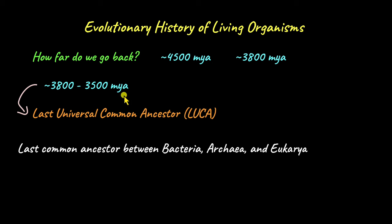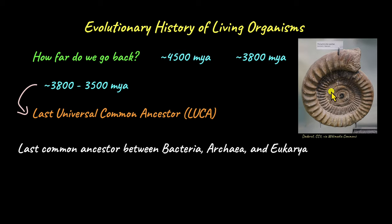A lot of evidence for living organisms during a certain time period in history comes from fossil evidence. For example, the Nautilus was a marine organism that lived a long time back, and when it fell on the ocean bed, the place where it fell hardened and formed fossilized rock. Scientists can date this rock to see when this organism lived.